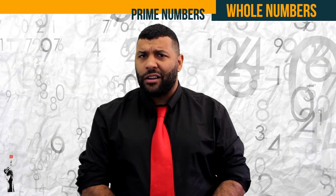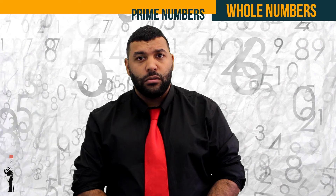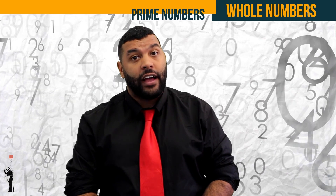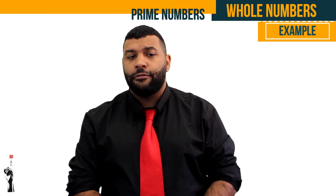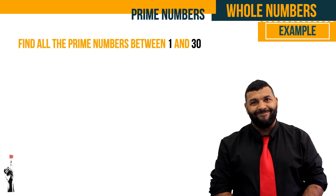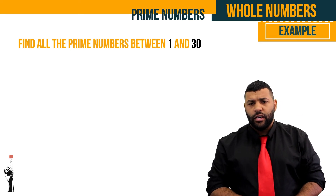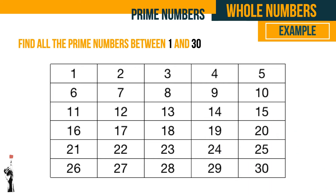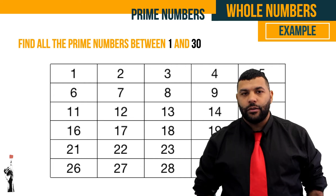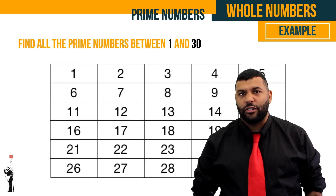How do we identify prime numbers? It's quite difficult to think of them off the top of your head, so it's easier to use a number table. Let's look at this example: find all the prime numbers between one and thirty. Here we have a grid numbered one through to thirty. The first thing we do is scratch out any universal numbers — that is, zero and one.